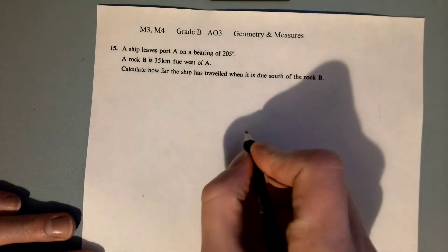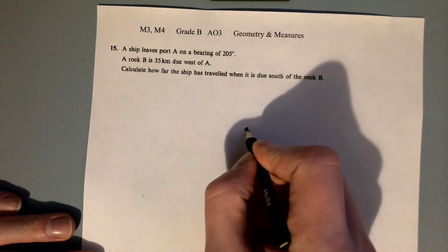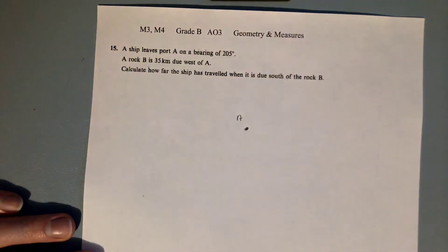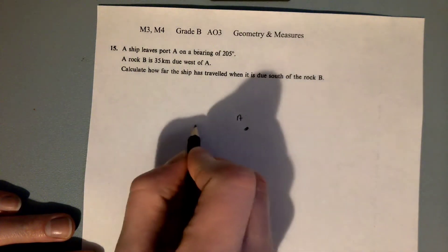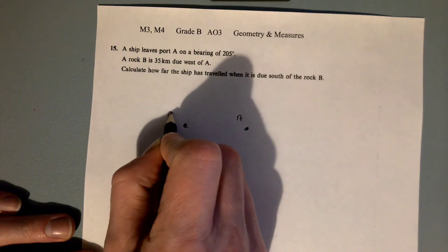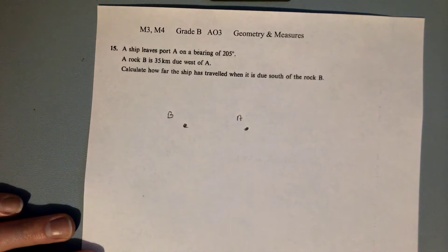A ship leaves port A on a bearing of 205 degrees. A rock B is 35 kilometers due west of A. So here's our point A, and then due west of it, 35 kilometers west, is point B.